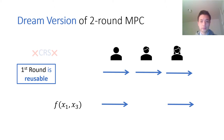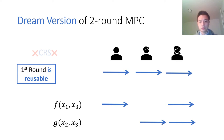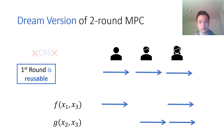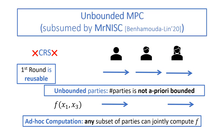Finally, its first round message should be reusable. Namely, if the computation for some function f is finished and there is some other function g that parties want to jointly compute, then what these parties need to do is not generate a fresh first round message — instead, they can reuse the original first round message for the new circuit g. We call an MPC satisfying all these properties an unbounded MPC.